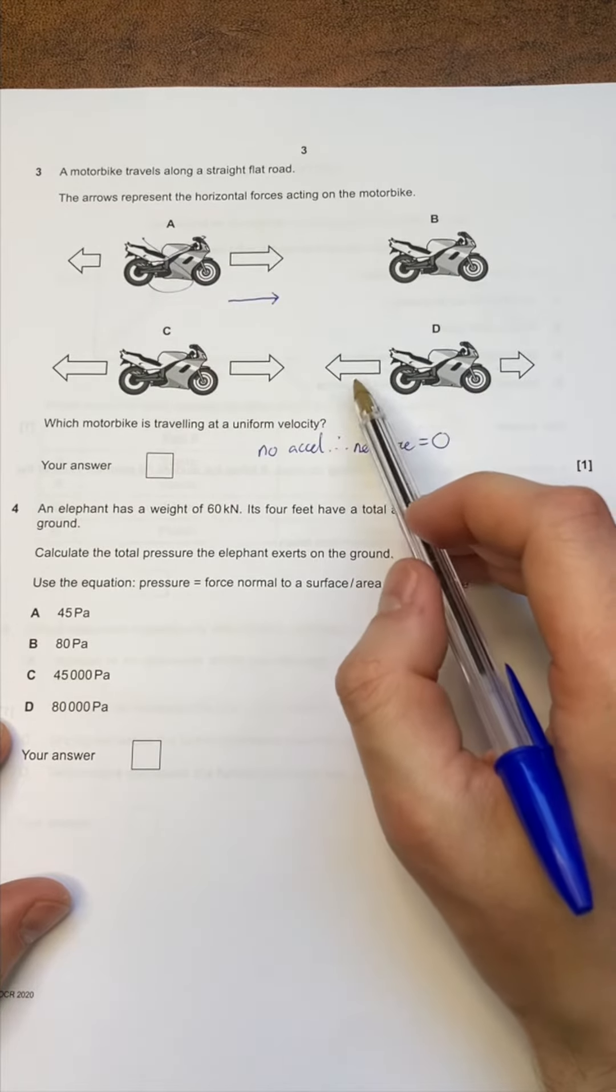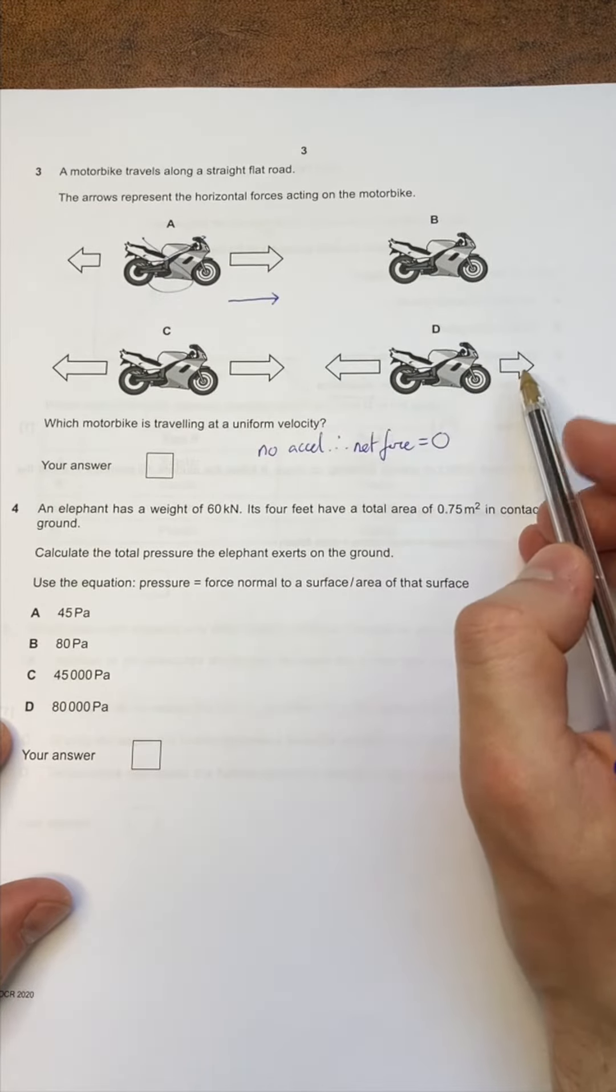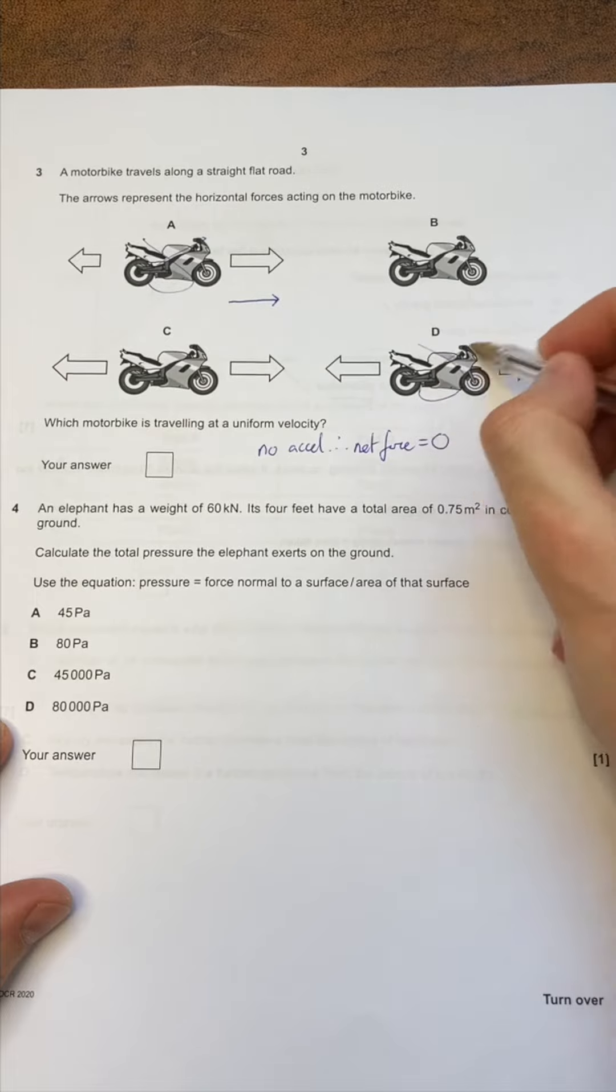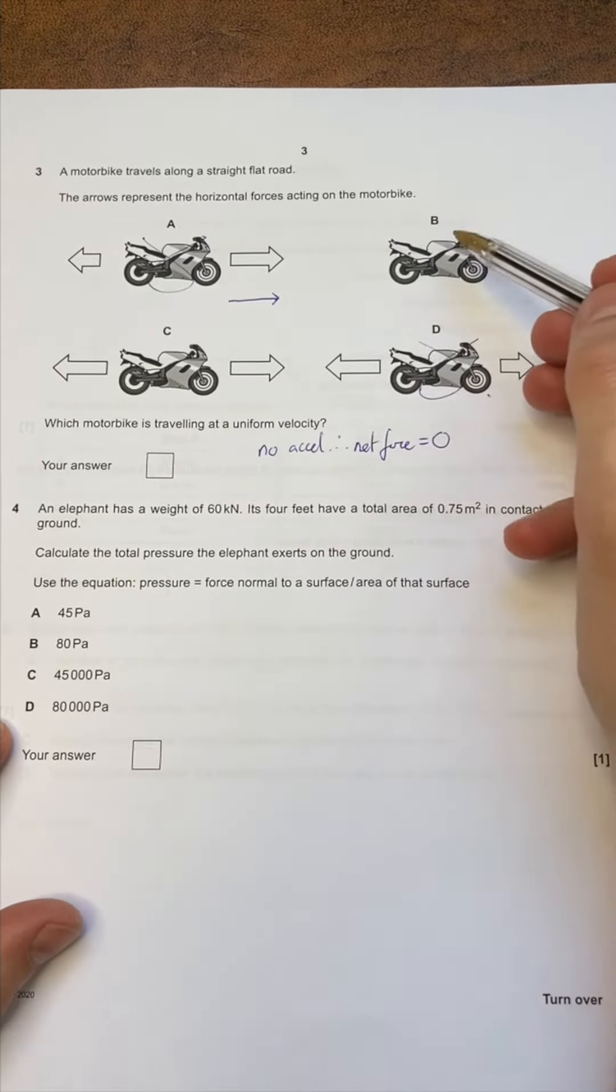Likewise with D, the force backwards is greater than the force forwards, so there's a non-zero net force here. Get rid of that one, leaving us with C and B.